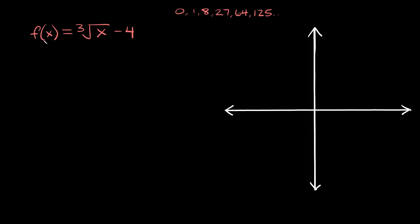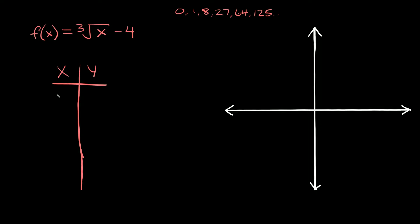So let's do this first example right here. We have f of x is equal to the cube root of x minus 4. The first thing we need to do is make a little x-y table. We're going to plug in some numbers for x, and remember you want to use perfect cubes. So in this case we can use negative 8, negative 1, 0, 1, and positive 8.